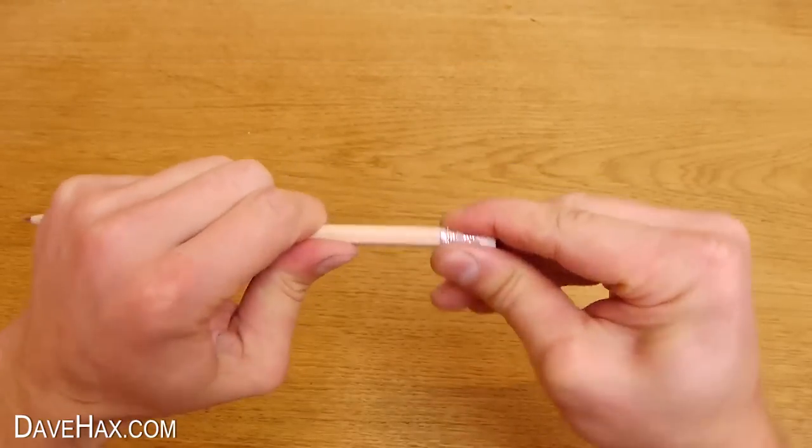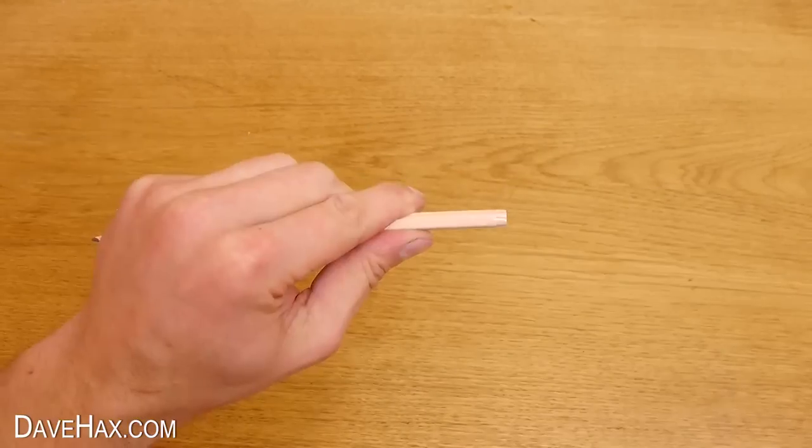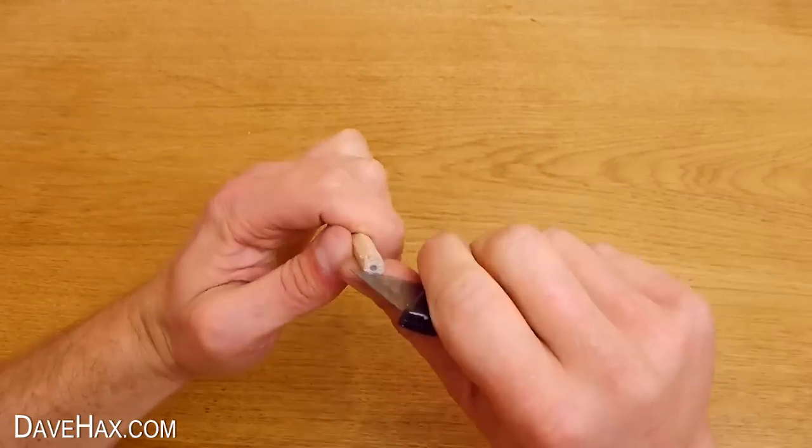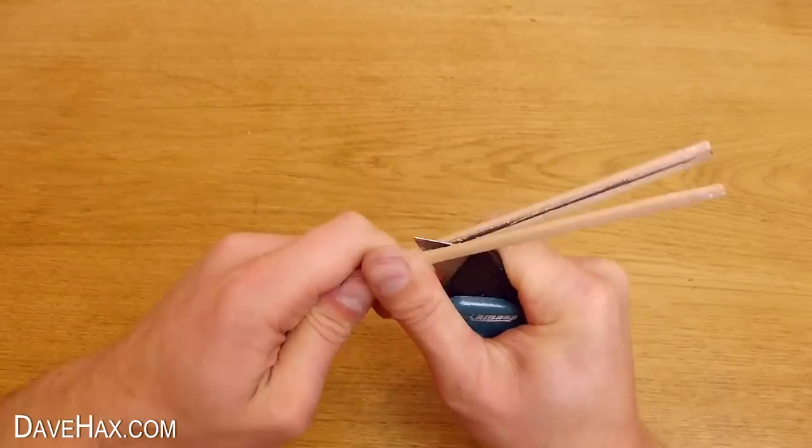Next, if your pencil has got an eraser on it, pull it off. Then, using a sharp knife, carefully split the pencil into two and take out the lead.